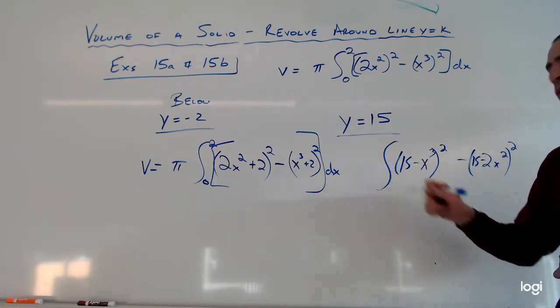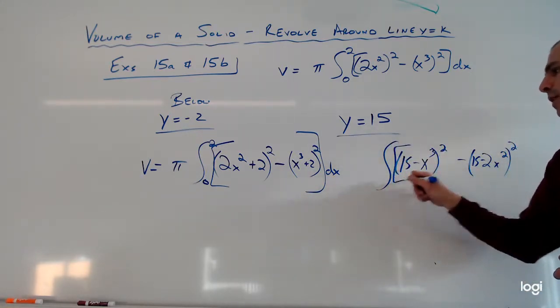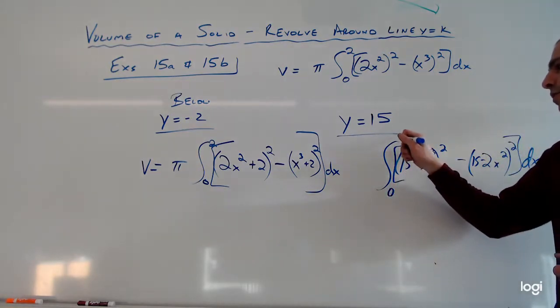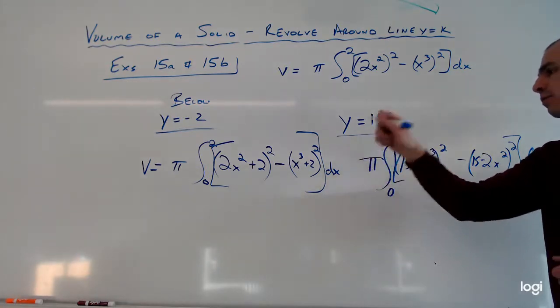We still have the whole thing with the differential, so we still got our DX, and then our bounds are 0 to 2 and our coefficient is pi.